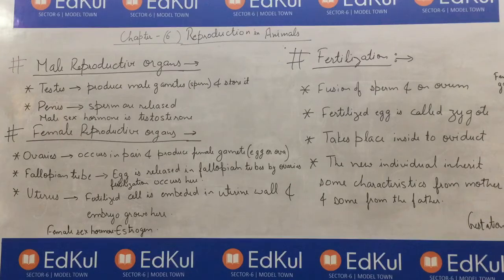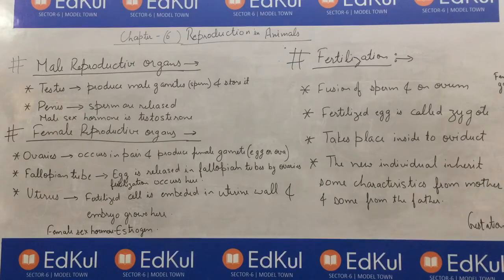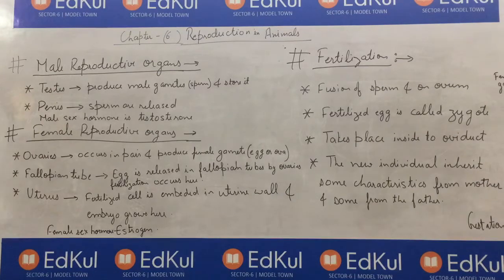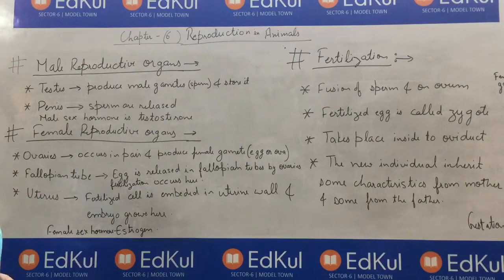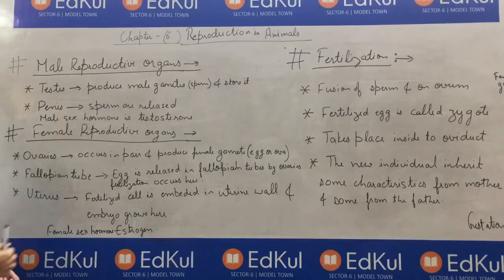We also have the urinary bladder, and the vas deferens is the connecting pipe that connects the testis to the urinary bladder. Then we have the urethra and then the penis. The testis produce male gametes — male gametes are sperm — and they produce and store sperms. These sperms are released through the penis out of the male body.